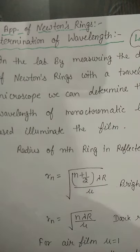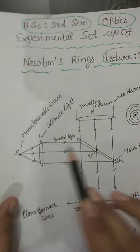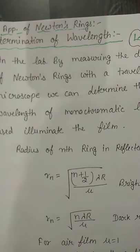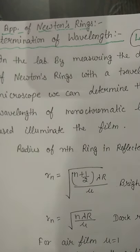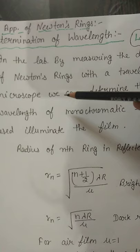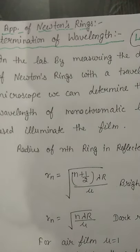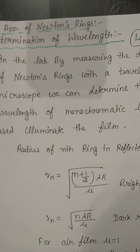Now we determine the wavelength. We have a monochromatic source, that is a sodium lamp. With the help of Newton's ring in the lab, by measuring the diameter of Newton's rings with a traveling microscope, we can determine the wavelength of the monochromatic light used to illuminate the film.